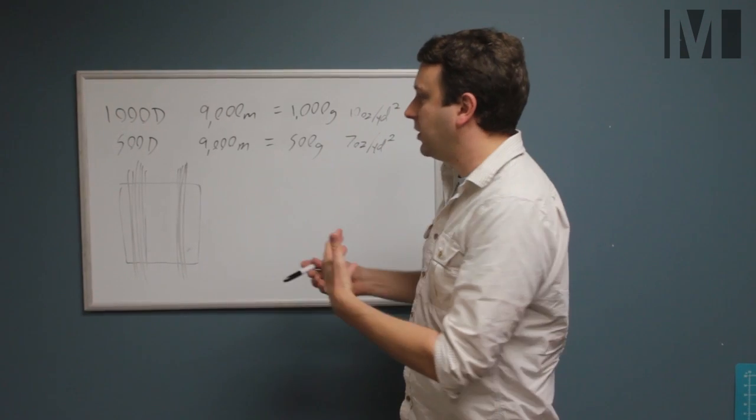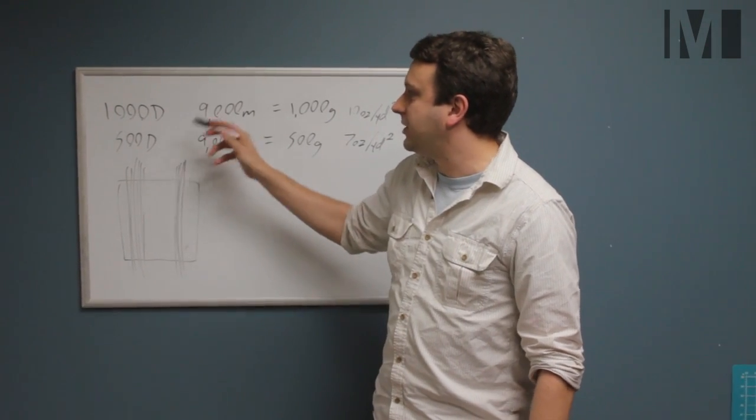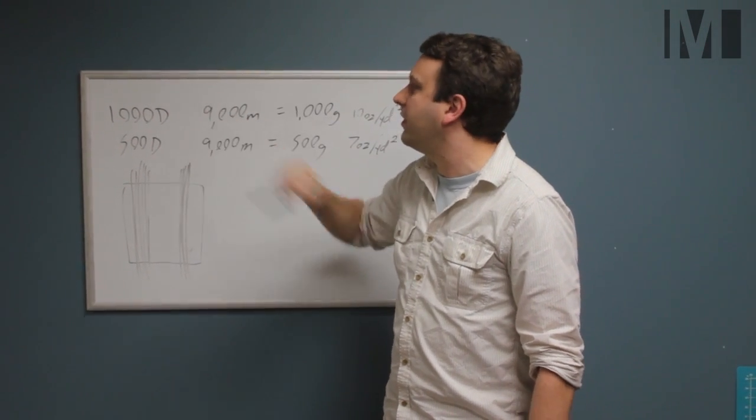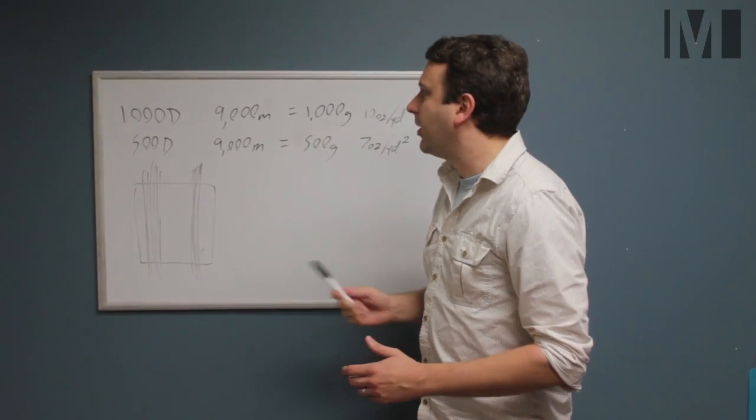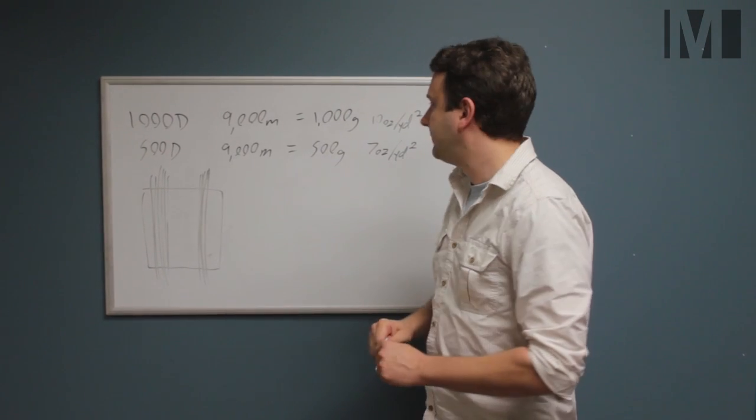And so you're saving a little bit of weight, but you're giving up the extreme abrasion resistance of the 1000D. The abrasion resistance is measured by the Martindale test, which is a whole other video.